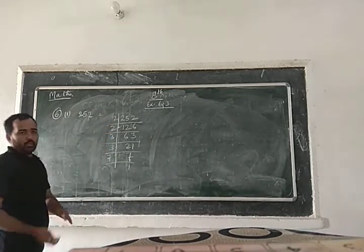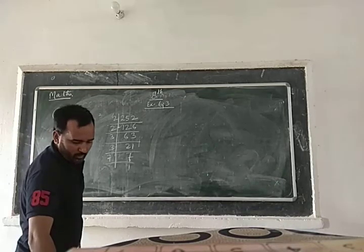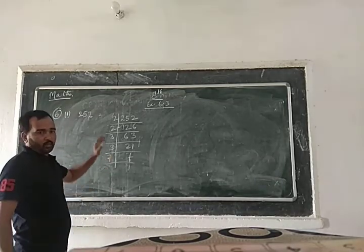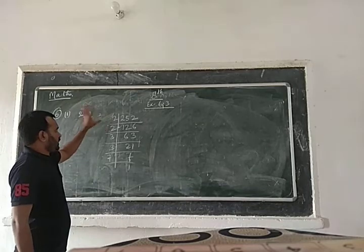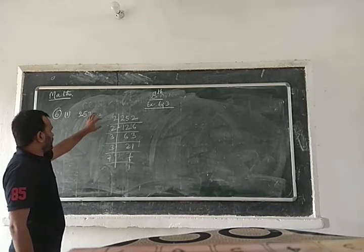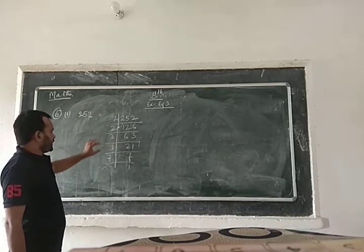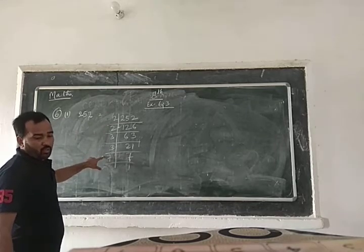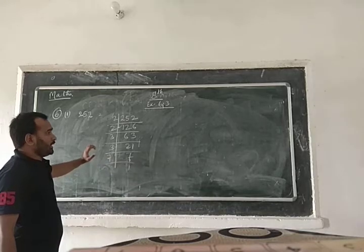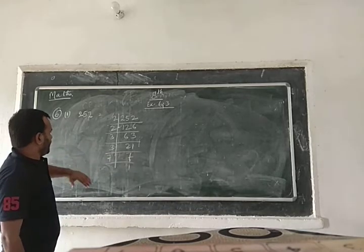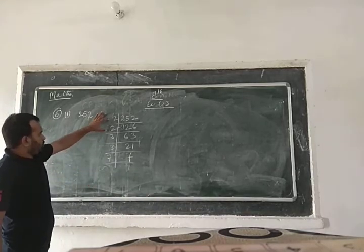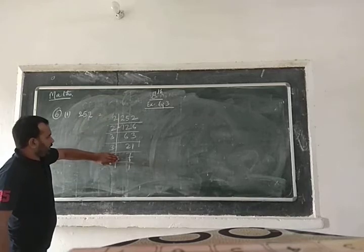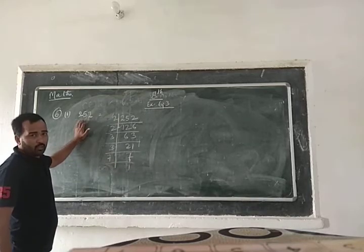Now, if you look at this, we have pairs: 2×2 is a pair, 3×3 is a pair. So the question is, by which number do you have to divide? We need to identify which factors are not paired. 7 is unpaired.